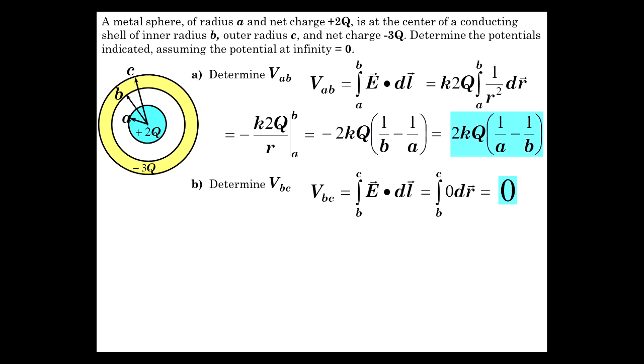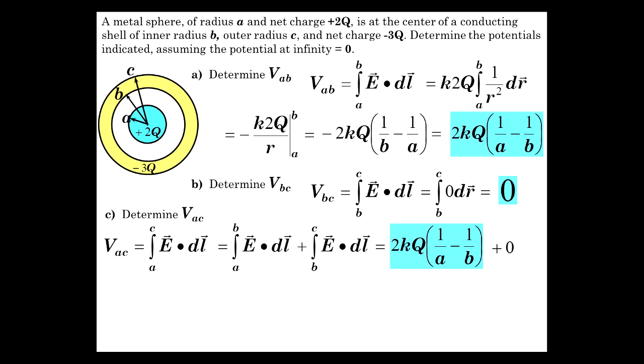So there is no potential difference. Now how about V_ac? Well, to do that you just integrate the field across a to c. We've already done it, so a to c equals a to b plus b to c, which is the answer we got for a to begin with plus zero.